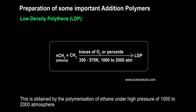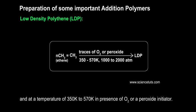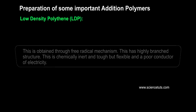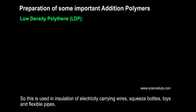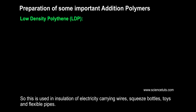Preparation of some important addition polymers. Low-density polythene (LDP): This is obtained by the polymerization of ethene under high pressure of 1,000 to 2,000 atmospheres and at a temperature of 350 K to 570 K in the presence of O₂ or a peroxide initiator. It is obtained through a free radical mechanism, has a highly branched structure, is chemically inert, tough but flexible, and a poor conductor of electricity. It is used in insulation of electricity-carrying wires, squeeze bottles, toys, and flexible pipes.